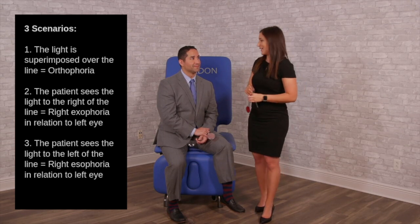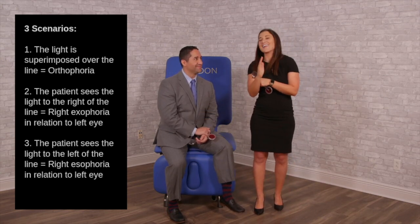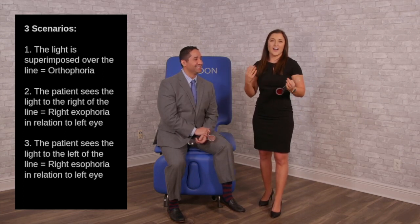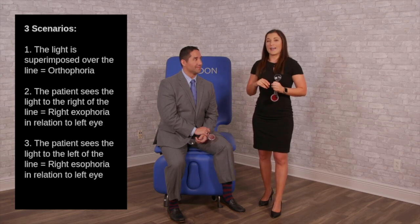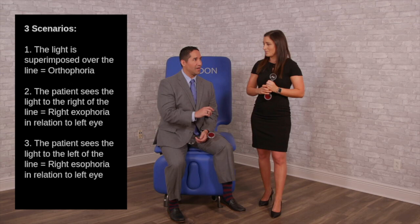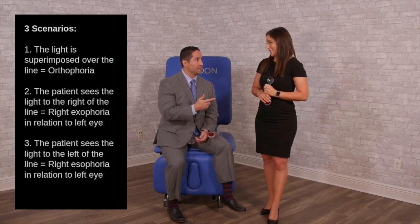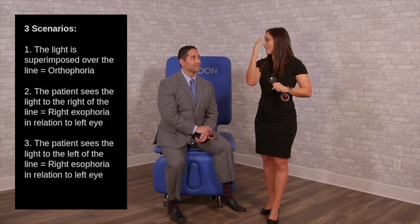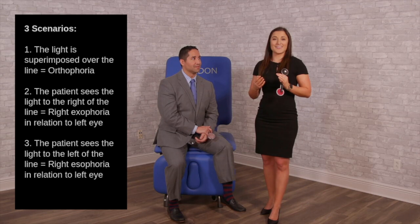There are three possible outcomes for horizontal deviations. First, the red line and the light directly on top of each other — that is normal, meaning both eyes are looking at the same object. Second, the white light to the right of the red line indicates an exophoria on the right side or an esophoria on the left side. Third, the light to the left or inside the line indicates an esophoria or esodeviation on the right eye or an exophoria on the left eye. Cover-uncover and cross-cover testing can determine which eye is affected.